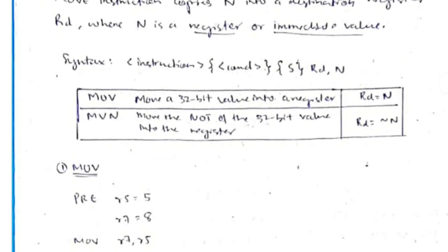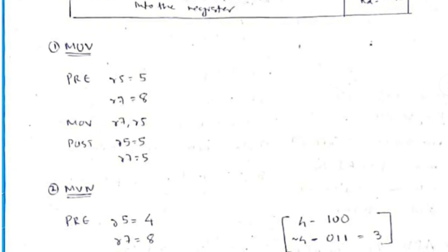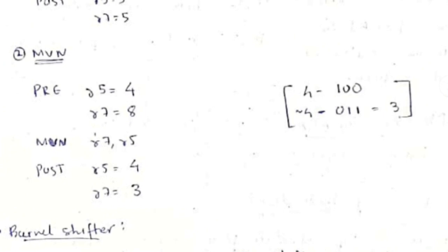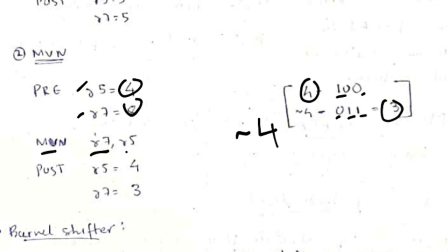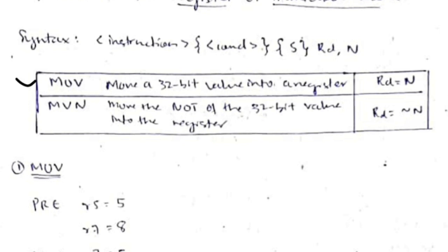The Move instruction has two variants: MOV and MVN. MOV transfers the value of the second operand into the destination register. For example, MOV r7, r5 transfers r5's value of 5 into r7. MVN moves the bitwise NOT (negative) of the second operand. For instance, if r5 = 4 (binary 100), its bitwise negation is 011 which equals 3, so MVN r7, r5 stores 3 in r7.